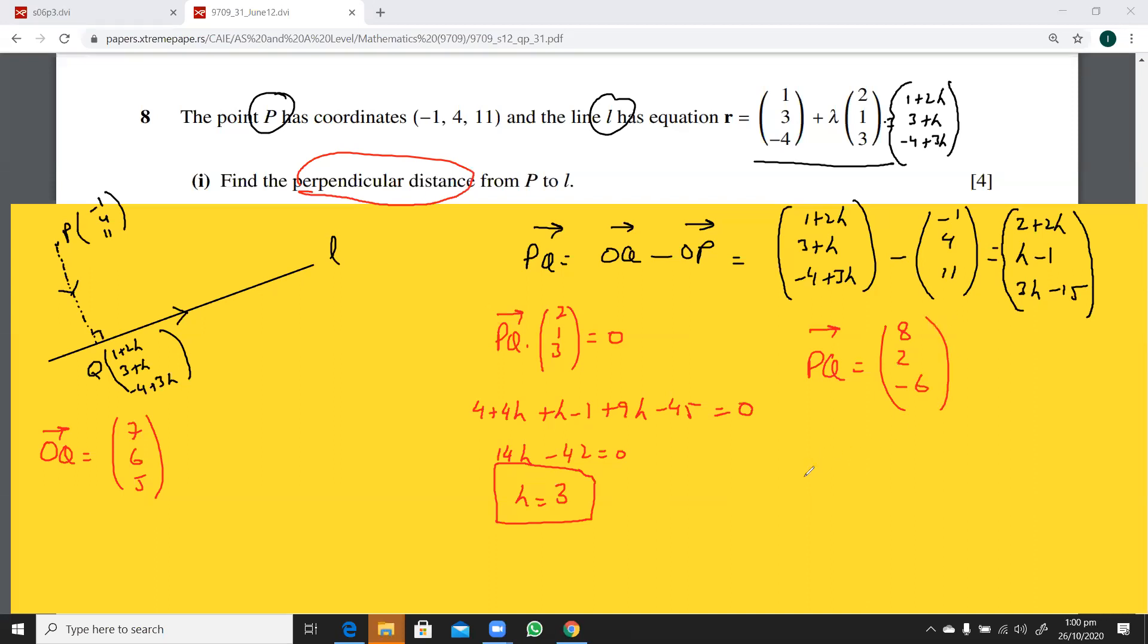So, we have, please keep an eye on my working, I might make a mistake here. This is 64 plus 4 plus 36. So, this PQ is 104, and you can find this using the calculator. So, is my working matching with your working, Bacu?